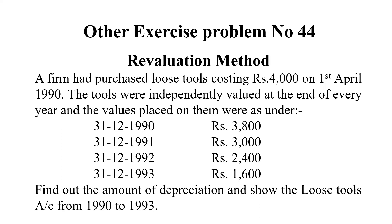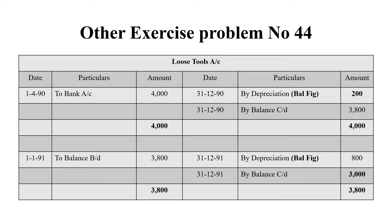Now let's work out the problem. On 1-4-1990, we purchased the loose tools. The bank account is debited Rs. 4,000. On the credit side, the revalued Loose Tools value is Rs. 3,800. So Rs. 4,000 minus Rs. 3,800 equals Rs. 200 — that balancing figure is the depreciation. We then bring down the balance of Rs. 3,800 to the next year. In the following year, the value is Rs. 3,000, so the balancing figure — Rs. 3,800 minus Rs. 3,000 — is Rs. 800, which is the depreciation.